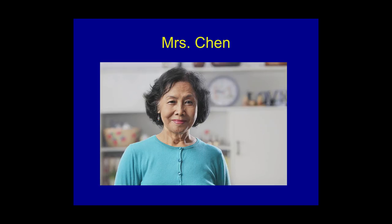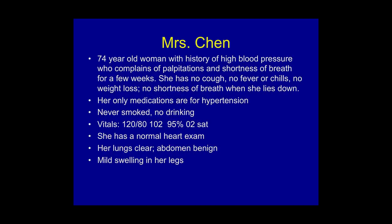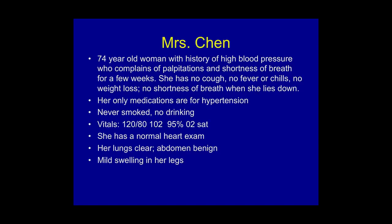Here comes part of the test. Mrs. Chen is a 74-year-old woman with a history of high blood pressure. She comes in with palpitations and shortness of breath for a few weeks. She has no cough, no fevers or chills, no weight loss, and no shortness of breath when lying down. She only takes medicines for her high blood pressure and has never smoked or drunk. Her blood pressure is normal, her heart rate is a little fast, she is oxygenating well, and she has a normal exam except for some swelling in her legs.